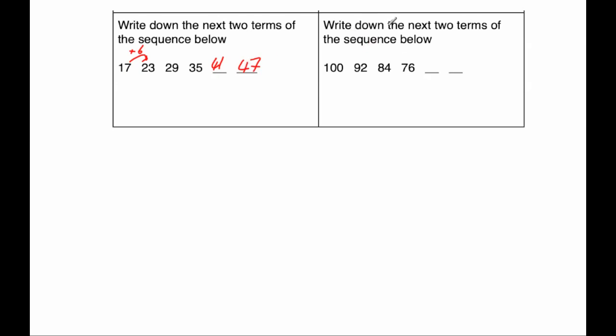The next question says write down the next two terms below. We've got 100, 92, 84, 76. To get from 100 to 92, we would take away 8. To get from 92 to 84, we would take away 8. To get to 76, we would take away 8. So each time here, we are subtracting 8.